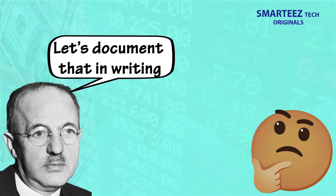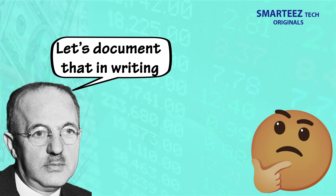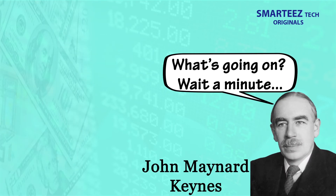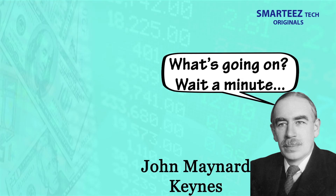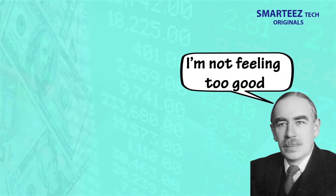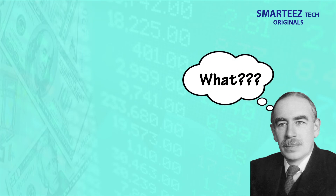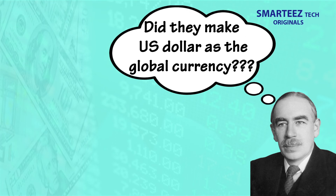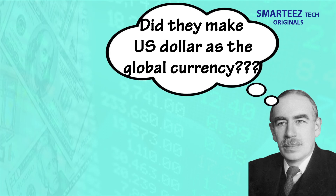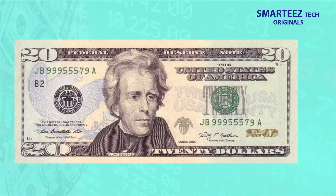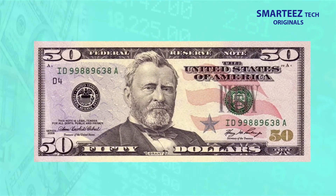When some delegates interpreted Harry Dexter White's phrase 'gold convertible currency' as meaning the US dollar itself, White was more than happy to push that interpretation and put it in writing before John Keynes could object. It all happened so fast that Keynes couldn't fully comprehend what was happening. Keynes also reportedly fell ill and wasn't available to resist the plan, and when he recovered, it was too late. He was very upset, especially because the United Kingdom had fallen in its importance. That is the story of how the US dollar became the world's currency in 1944.